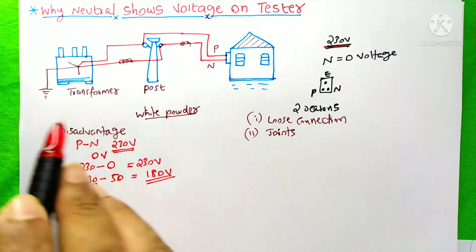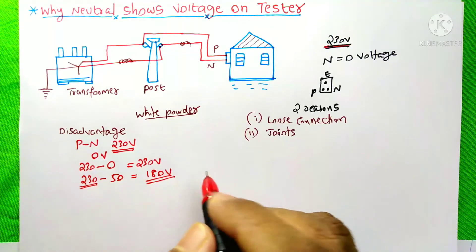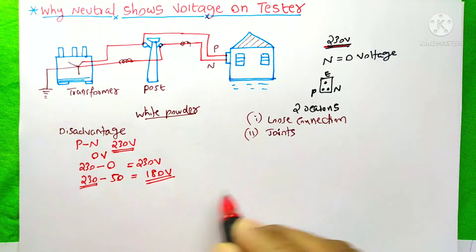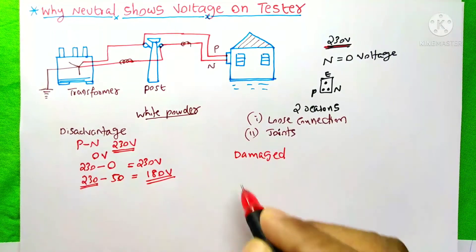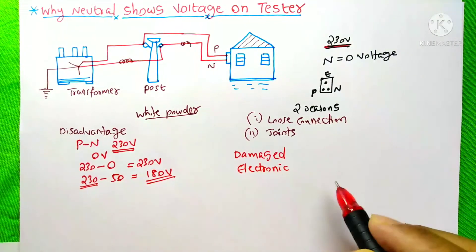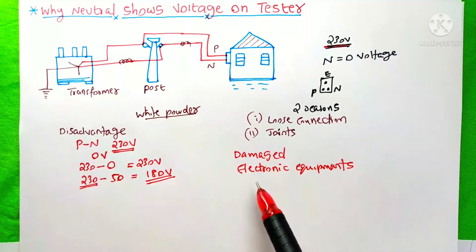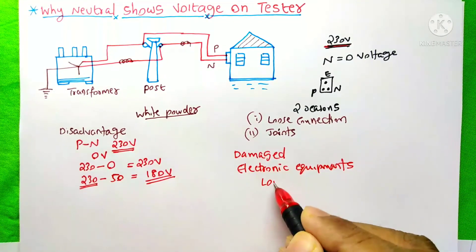At this time, your home appliances will work but it is not getting the full voltage. Gradually, it will be damaged. Due to this problem, the electronic appliances are going to be damaged very easily. Because these appliances are very sensitive for the low voltage.